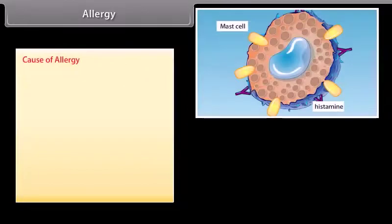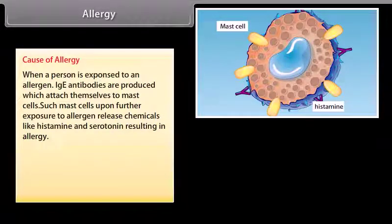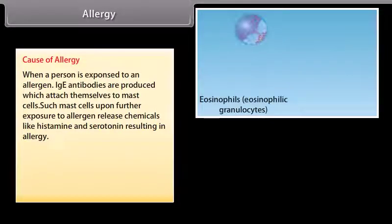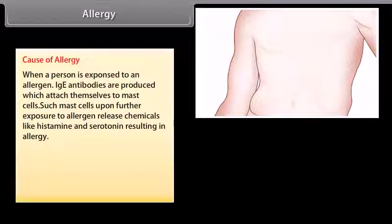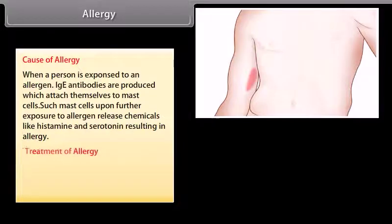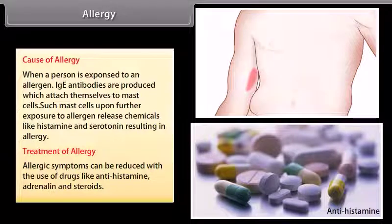When a person is exposed to an allergen, IgE antibodies are produced which attach themselves to mast cells. Such mast cells, upon further exposure to the allergen, release chemicals like histamine and serotonin, resulting in allergy. Allergic symptoms can be reduced with the use of drugs like antihistamines, adrenaline, and steroids.